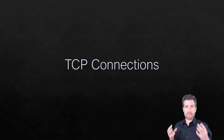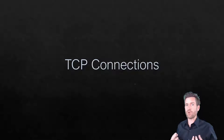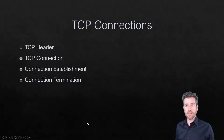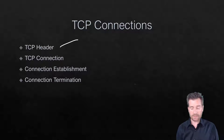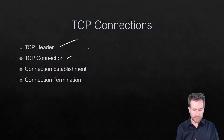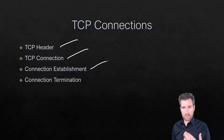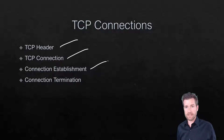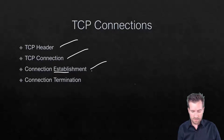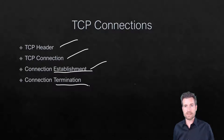We've mentioned multiple times that TCP establishes connections, but what does it exactly mean to establish connections? In this module, we'll take a look at the TCP header, a brief overview since we covered it more in depth earlier. We'll look at TCP connections, the establishment of those connections — the three-way handshake — and then the termination of these connections. We'll talk about the whole life cycle of the connections that TCP makes.